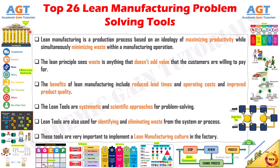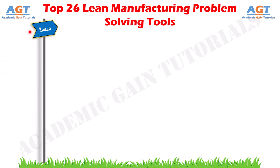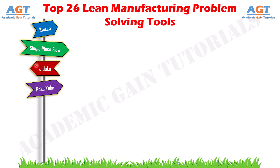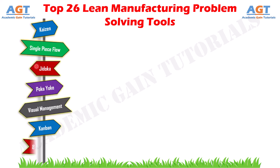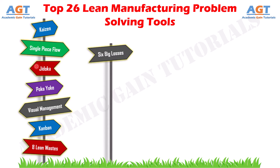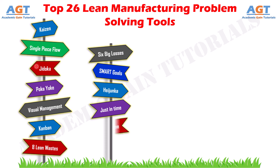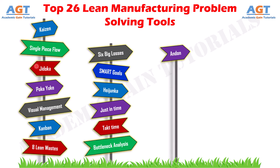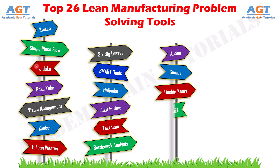The list of top lean tools for problem-solving are: Kaizen, Single-Piece Flow, Jidoka, Poka Yoke, Visual Management, Kanban, 8 Lean Wastes, 6 Big Losses, Smart Goals, Heijunka, Just-in-Time, Takt Time, Bottleneck Analysis, Andon, Gemba, Hoshin Kanri, and Overall Equipment Effectiveness (OEE).